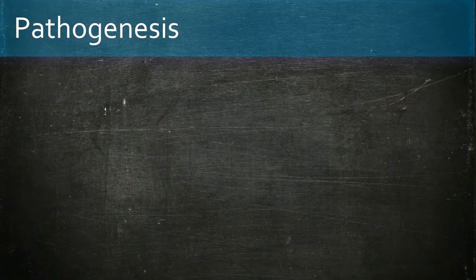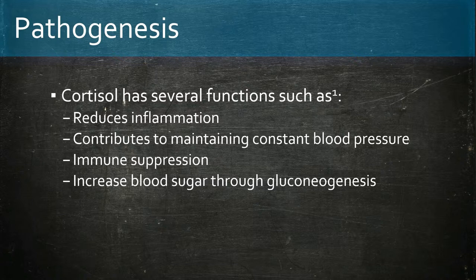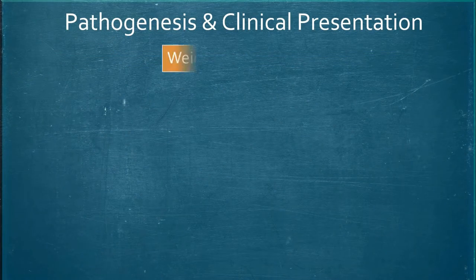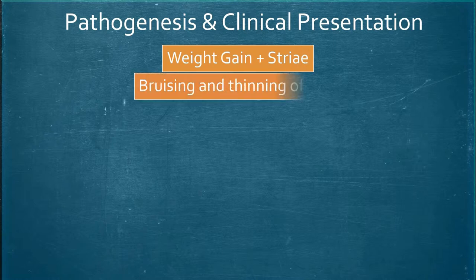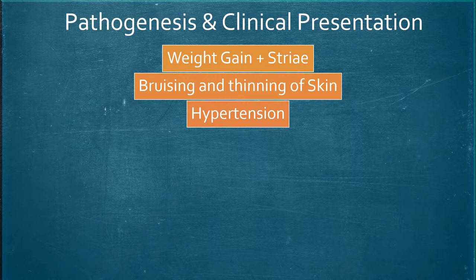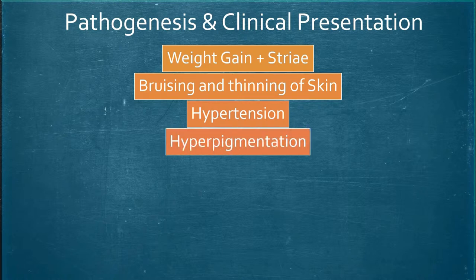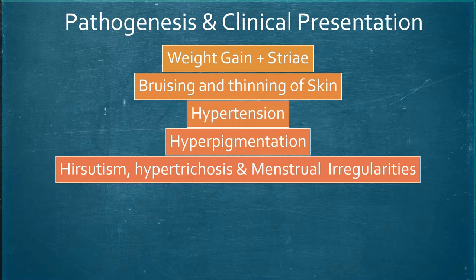Cortisol plays a multifaceted role in the body, including reduction in inflammation, sustaining blood pressure, suppressing the immune system, and increasing blood sugar through gluconeogenesis. Therefore, having too much cortisol will impact and derange these functions. Over the next few slides, we will look at how excess free cortisol results in signs and symptom manifestations in Cushing's syndrome, linking the micro level to the macro level.